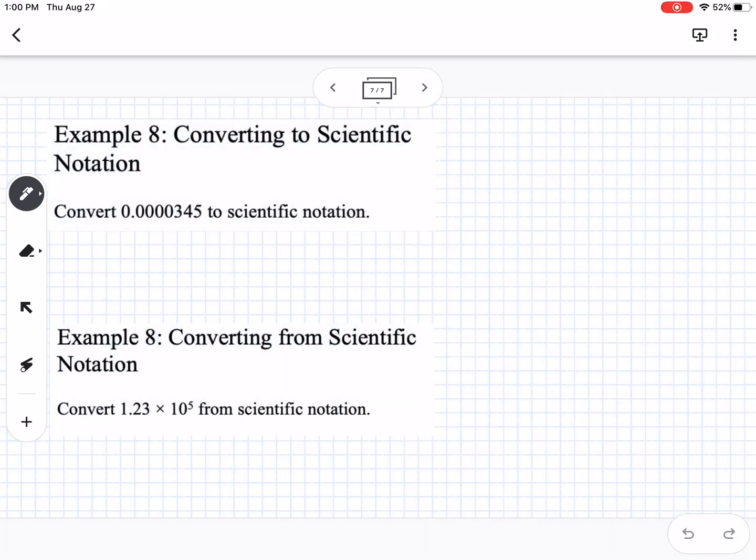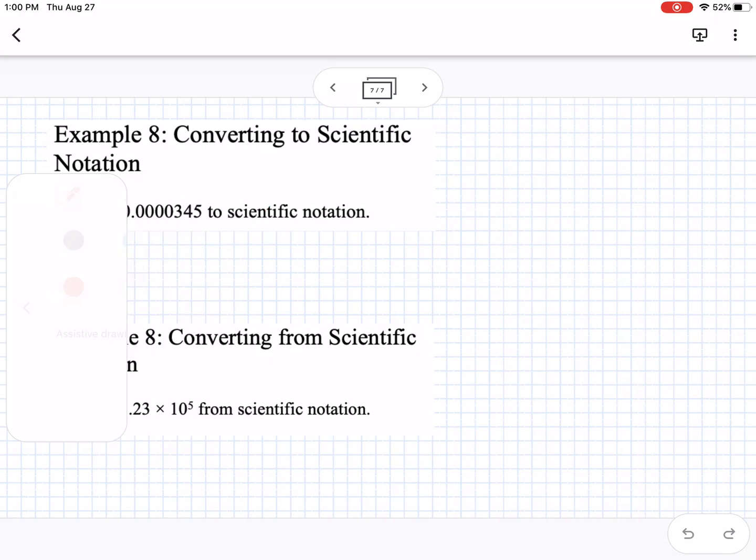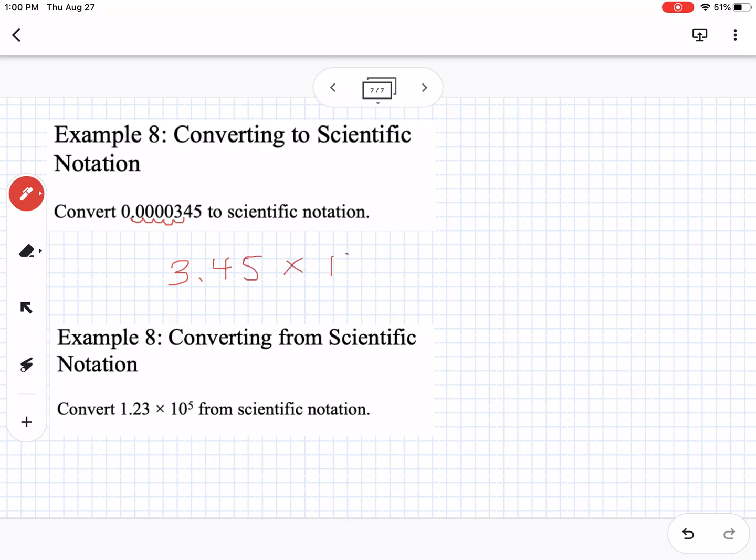The last thing is converting to scientific notation. You can use the exponent in scientific notation to tell you how many times you're moving the decimal place. With scientific notation, your number needs to be between 1 and 10. Looking at 0.000345, I have 3, 4, 5, so I want to make that 3.45. I move the decimal 1, 2, 3, 4, 5 spaces. This would be 3.45 × 10⁻⁵. It's a negative exponent because this number is smaller than 1. Positive exponents mean the number is bigger than 1, negative means smaller.